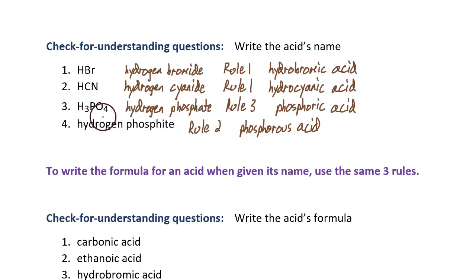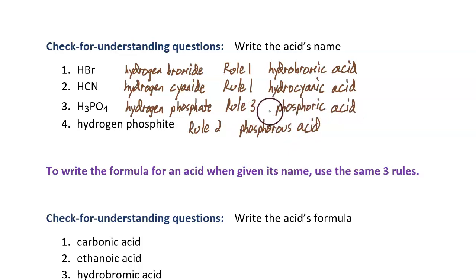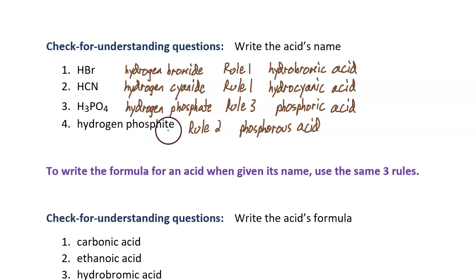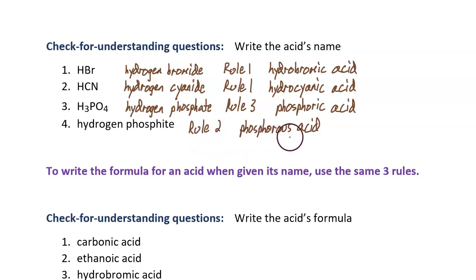Number three is hydrogen phosphate. It ends in "-ate", so it's rule three. Rule three says the name ends in "-ic": phosphoric acid — no hydro this time. Number four doesn't have a formula; it already gives us the name, which is helpful. It ends in "-ite", so it's going to be rule two. Rule two is the one where the word ends in "-ous": phosphorous acid.